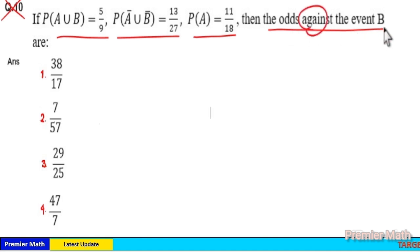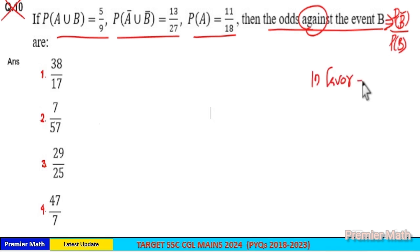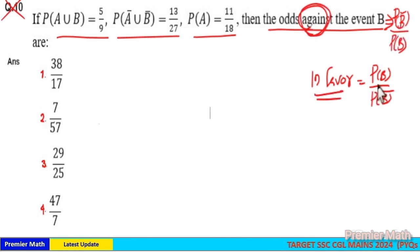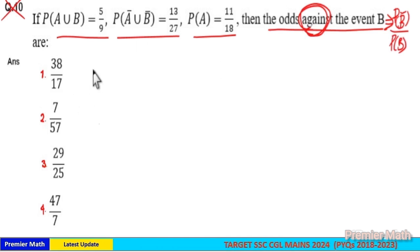Here odds against B. The formula is equal to P(B') divided by P(B). If it is in favor of B, the formula is equal to P(B) divided by P(B'). Now you can see if it is against B, P(B') is in the numerator; if it is in favor of B, P(B) is in the numerator.